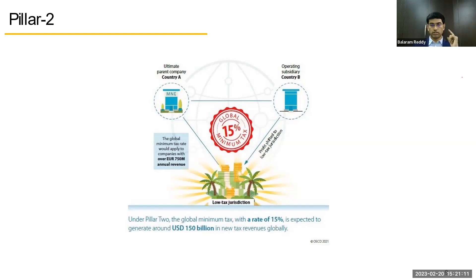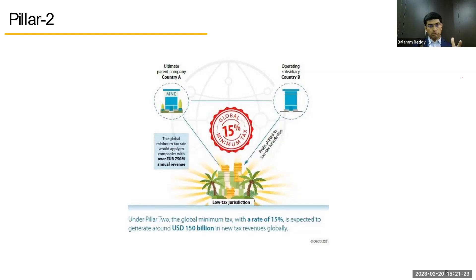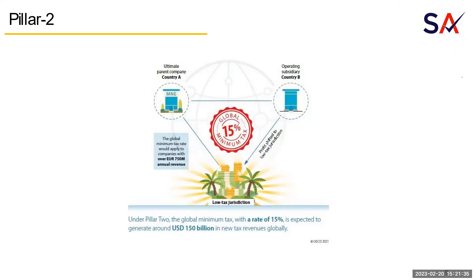To summarize: Pillar One is specific to groups or MNEs with a turnover of 20 billion euros or more, and Pillar Two applies to those with 750 million euros or more. The UAE will also be implementing this, but it is not effective yet — possibly in 2024 this arrangement will become effective, at which point any companies falling in those groups will have to comply.